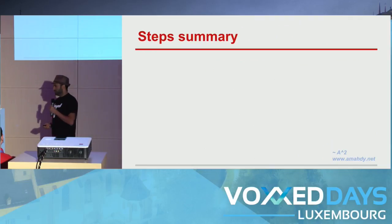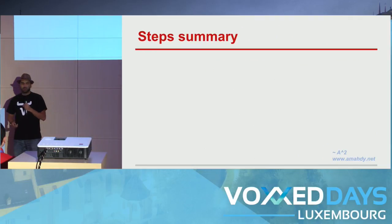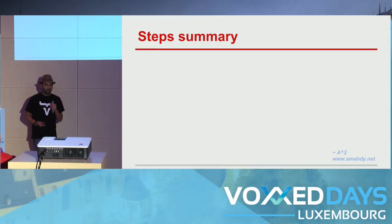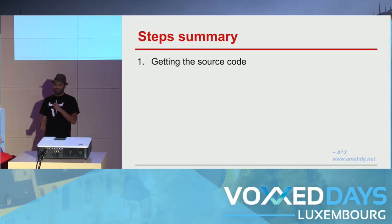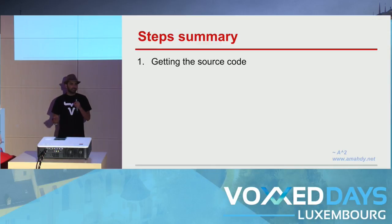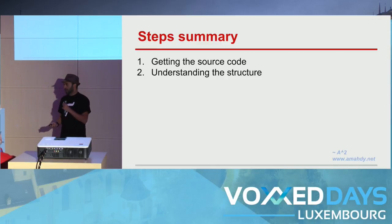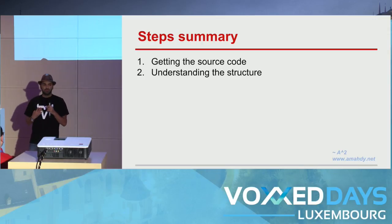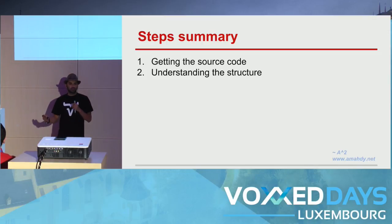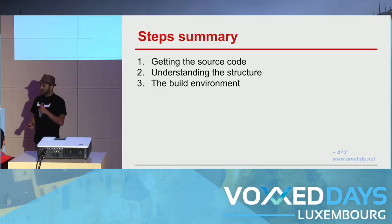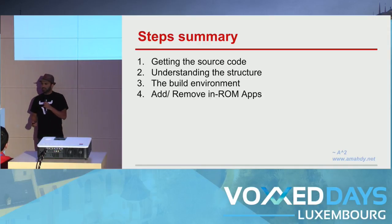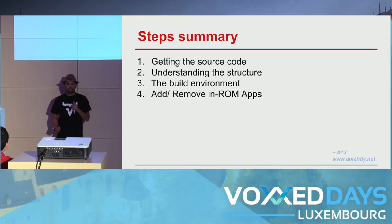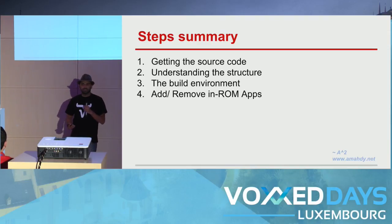This is a summary of what you would normally do to hack a version of Android after downloading the source code. First, getting and downloading the source code. Second — and from my point of view the most important point — understanding the structure: where is what, how to do what. Then understanding the build environment to be able to build custom modifications. Then learn how to modify built-in apps, add your own apps, remove apps, and so on.